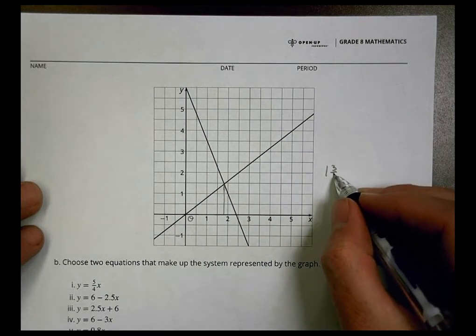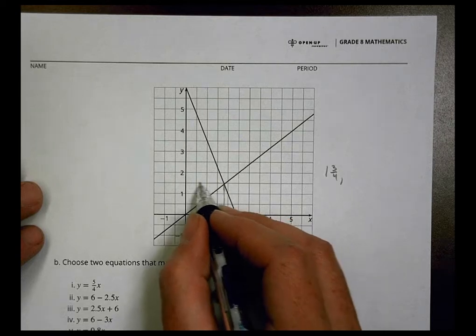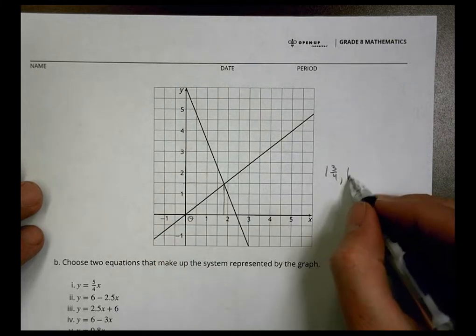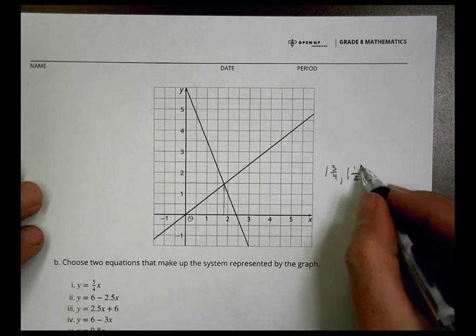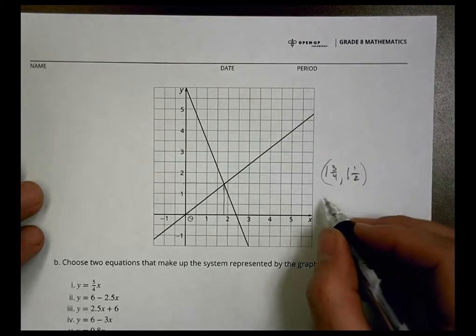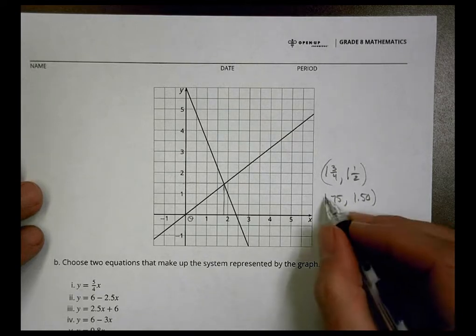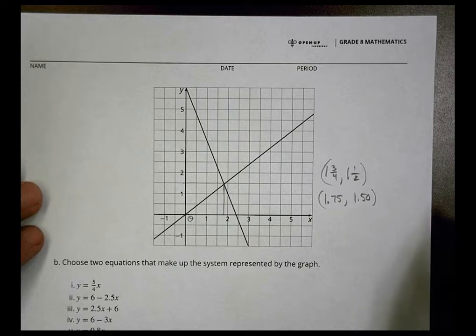And it's meeting right here at one and a half for the y. So I would estimate somewhere like one and three-fourths to one and a half, something along those lines there. As a decimal perhaps you might write 1.75 and 1.50. That'll come in handy later on, but that's about my estimate.